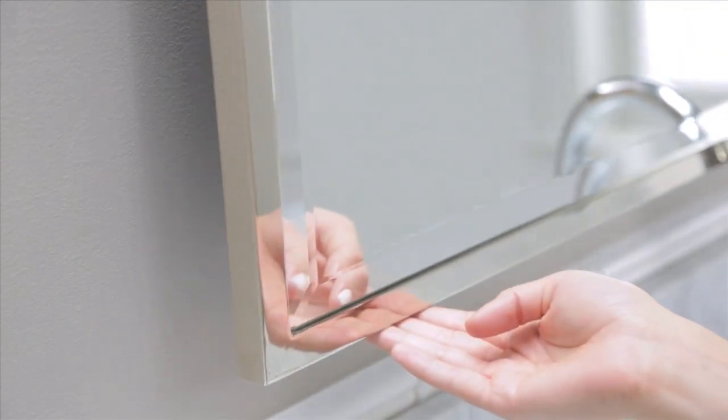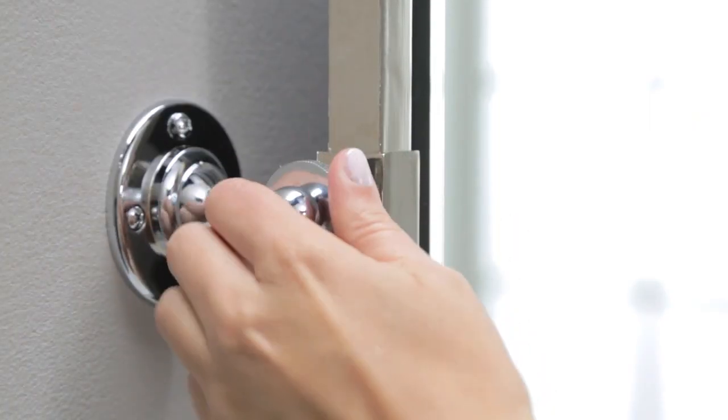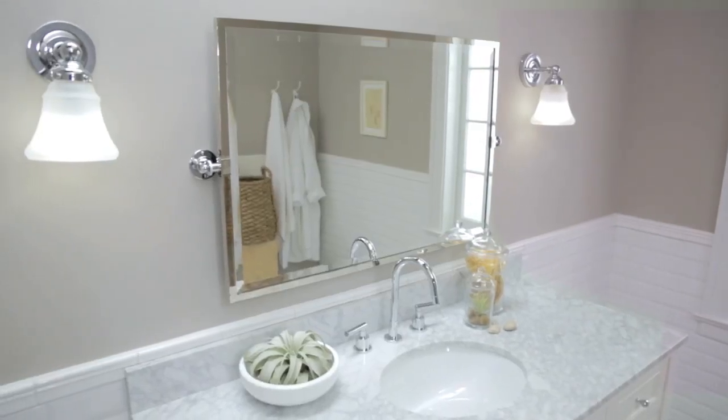You can tilt your Kensington pivot mirror by loosening and tightening the dials on the mounting brackets. Enjoy the latest addition to your bath.